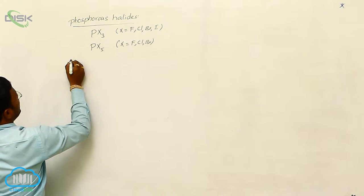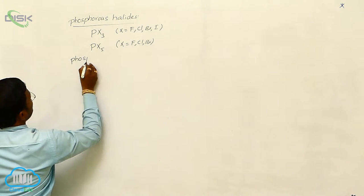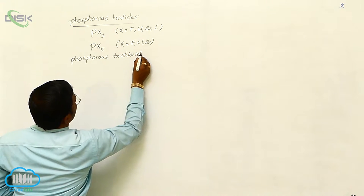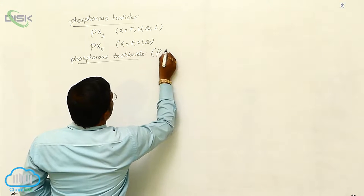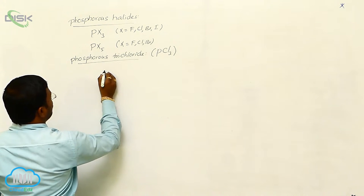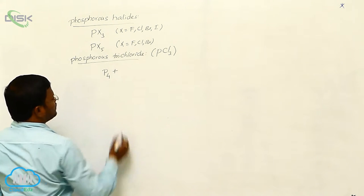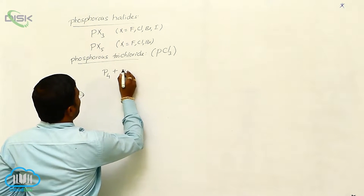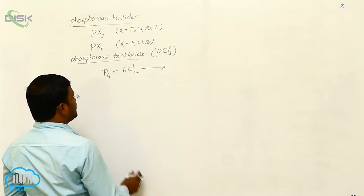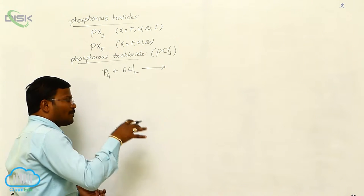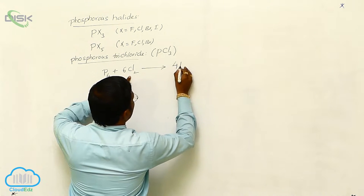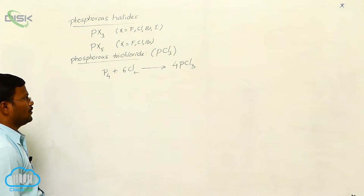The most important phosphorus trihalide is phosphorus trichloride, represented as PCl3. For its preparation, when dry chlorine gas is applied onto white phosphorus at high temperatures, the reaction produces 4 PCl3 molecules. This is the first preparation method.